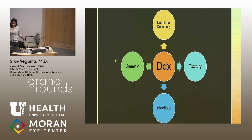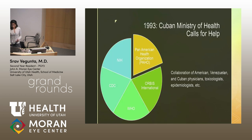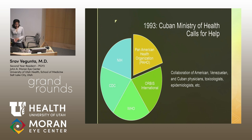Given all these presentations, there was still a large differential diagnosis to be narrowed. Was it nutritional, toxic, infectious, or genetic? The Cuban Ministry of Health, once prevalence reached nearly 50,000, asked for help from the World Health Organization, Pan American Health Organization, NIH, CDC, and Orbis. This became a collaboration between physicians, epidemiologists, and public health officials from several countries.